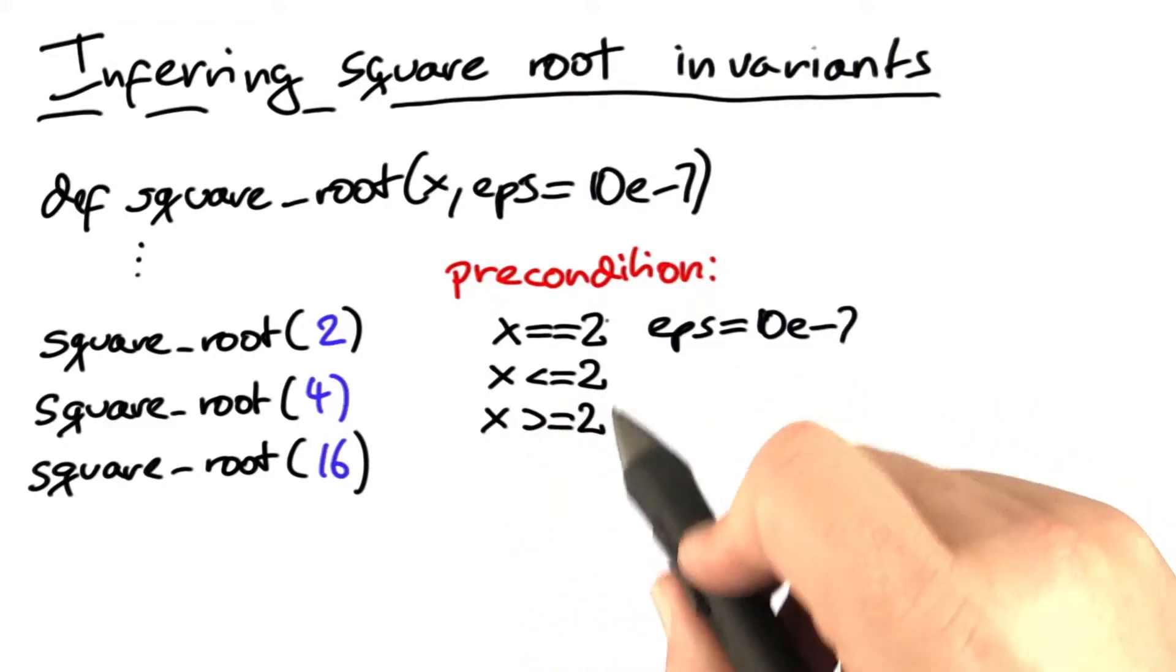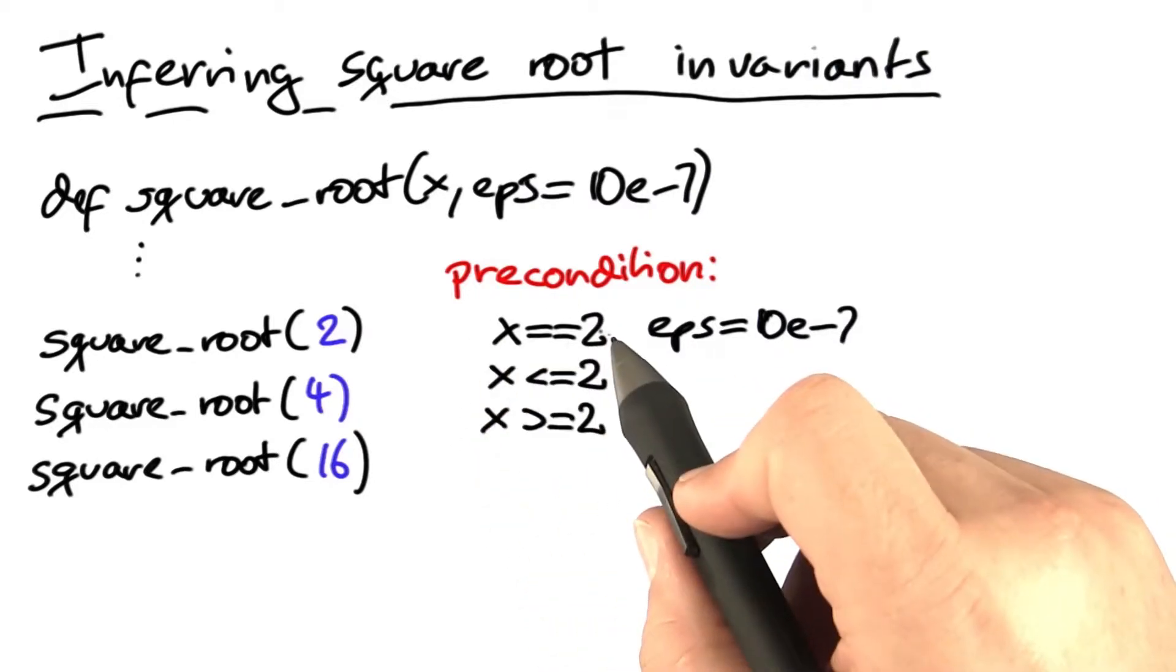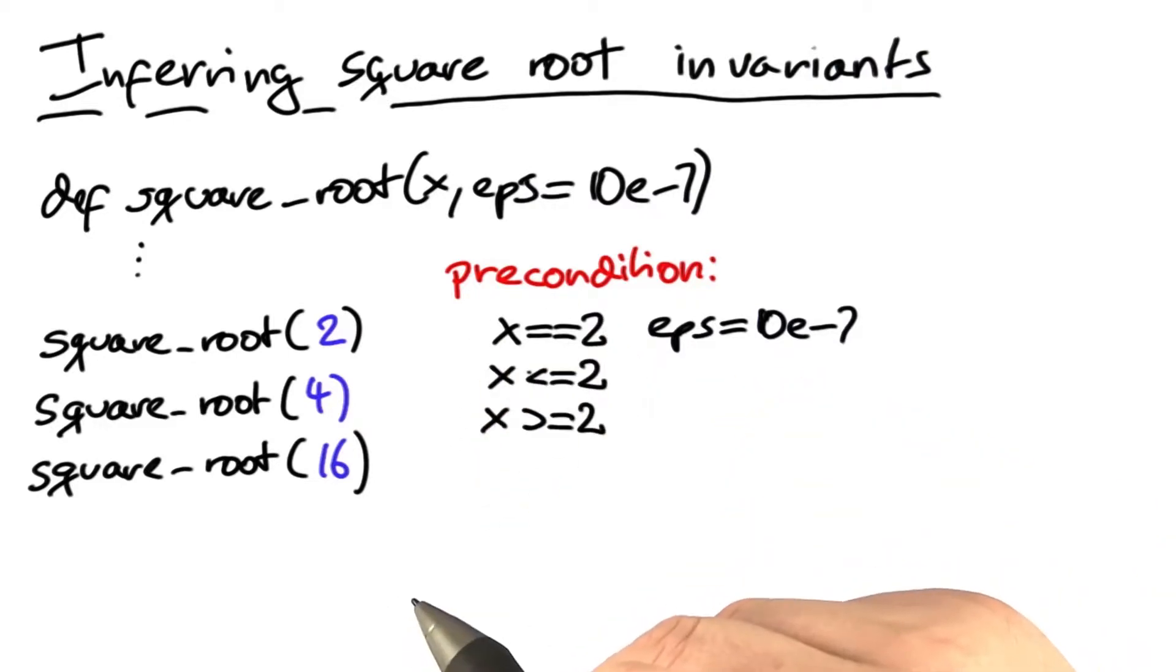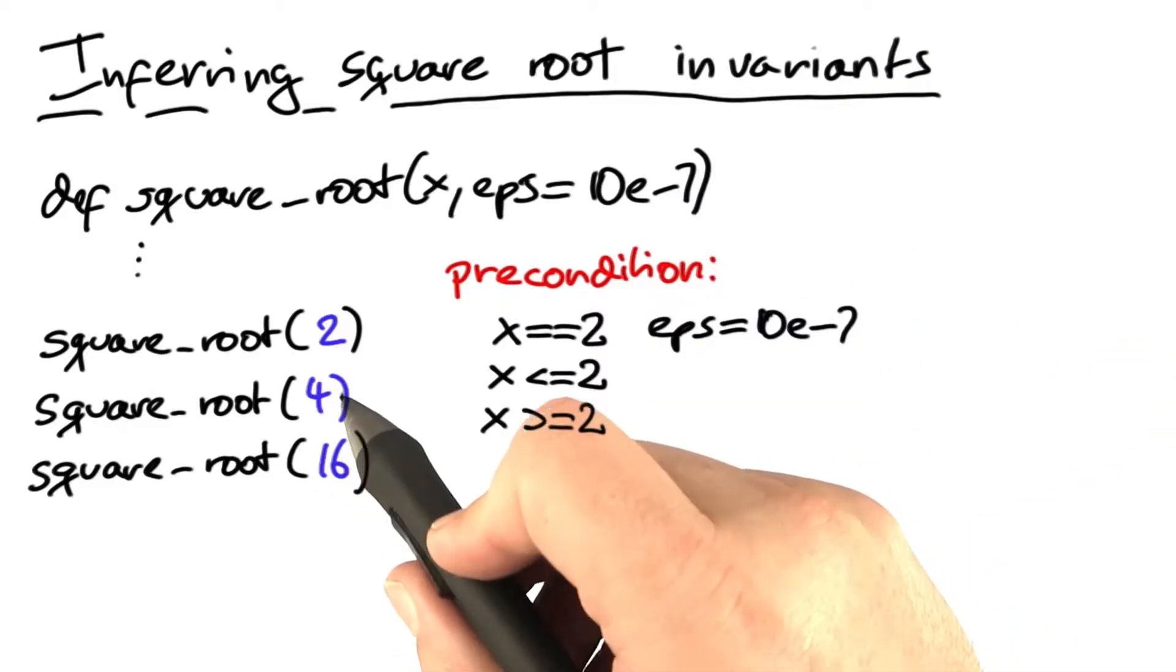However, these patterns would also be instantiated: x is smaller or equal than 2 and x is greater or equal than 2, because these patterns also hold for the values that we observed. In the next iteration,